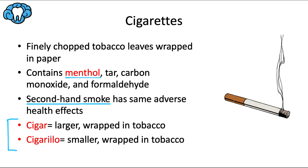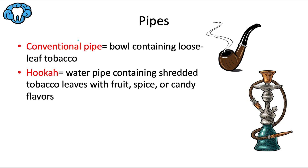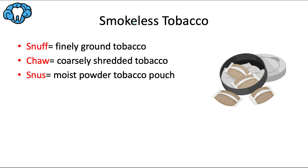There are some size variants to conventional cigarettes. A cigar is larger and wrapped in tobacco — either actual tobacco leaves or paper fabricated from tobacco — and a cigarillo is a smaller version also wrapped in tobacco. Pipes use a bowl that contains loose leaf tobacco, like the traditional pipe you see in movies such as Sherlock Holmes. Hookah refers to a water pipe containing shredded tobacco leaves with fruit, spice, or candy flavors. While hookah might taste better, all of the adverse health effects are the same — in fact, every puff of hookah smoke has the same amount of nicotine as an entire cigarette, so that's 1 to 2 milligrams of nicotine per puff.